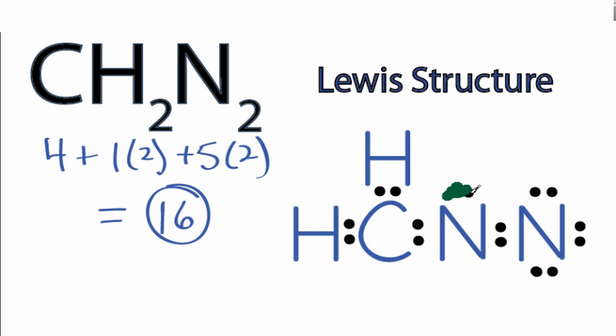Let's move these 2 valence electrons here to form a double bond with carbon. The nitrogen still has 6 valence electrons, but now the carbon has 8 valence electrons, and we're still only using the 16 valence electrons we have for the CH2N2 Lewis structure.